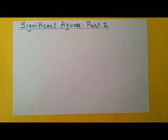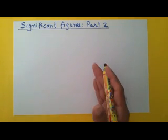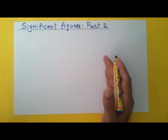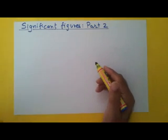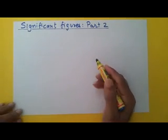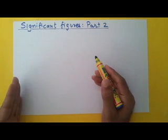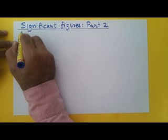Let us continue our discussion on significant figures in this second part of the video. In the previous video, in part 1, we discussed how propagation of error happens when we have two physical quantities being added or subtracted. In this video, we are going to look at propagation of errors and see what happens when we have two physical quantities being multiplied or divided. We will start with multiplication.